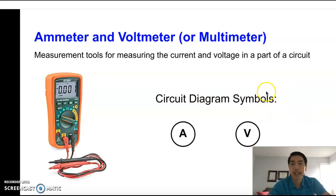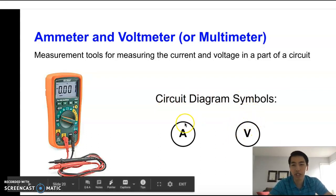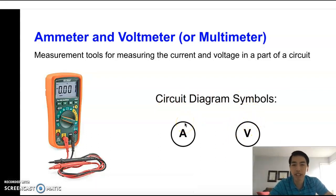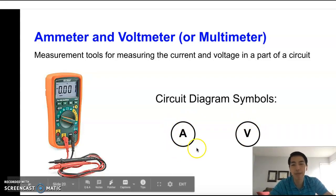And finally, we have ammeters and voltmeters. Ammeters are for measuring the amps going through a part of a circuit, whereas voltmeters measure the volts. So the diagram symbols are fairly straightforward. An ammeter is a circle with a capital A written inside, and a voltmeter is a circle with a capital V written inside.